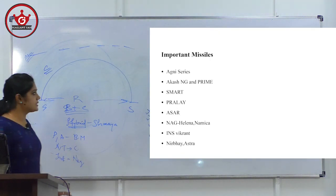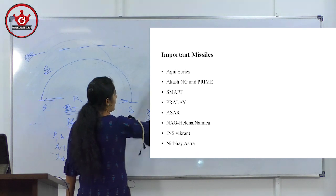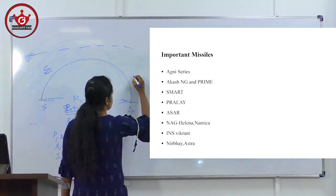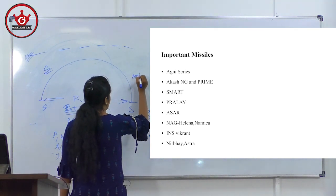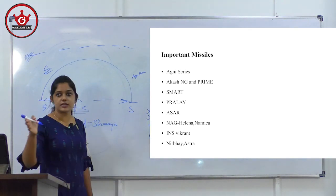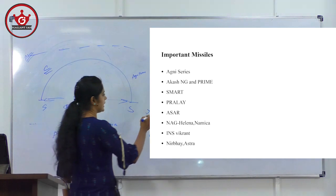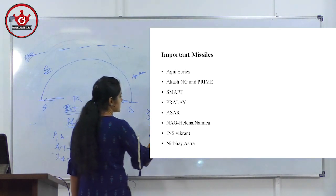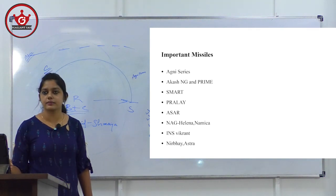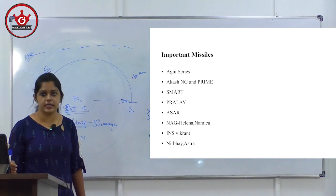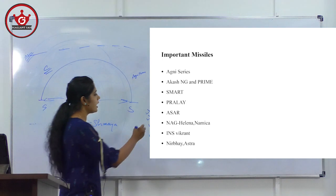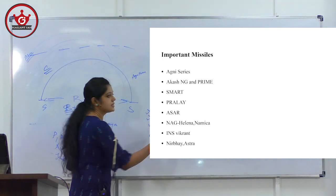Important missiles: Agni missiles, Akash next-generation and Akash Prime are important. We have the Pralai missile — a ballistic missile; questions have been asked. ASAT — anti-satellite — also known as Mission Shakti. Note: Pokhran 2 is called Operation Shakti; this is Mission Shakti. Nag has Helena and Namika versions. INS Vikrant, Nirbhay missile, Astra missile — all are important.